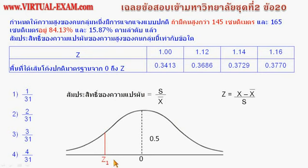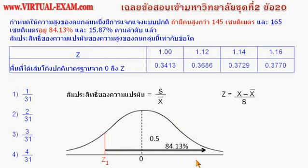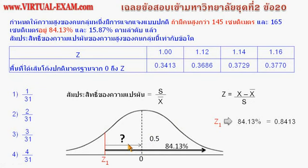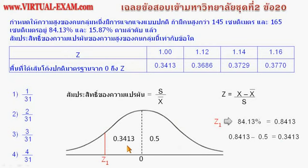Z1 แทนความสูง 145 cm คนที่สูงกว่า 145 cm คือพื้นที่ที่อยู่ทางขวาของ Z1 ถ้าคนกลุ่มนี้มี 84.13% พื้นที่ทางขวาของ Z1 คือ 84.13% ของพื้นที่ทั้งหมด แปลง 84.13% เป็นทศนิยมได้ 0.8413 พื้นที่ซีกขวา (จาก 0 ขวา) เท่ากับ 0.5 พื้นที่ที่เหลือจาก 0 ถึง Z1 คำนวณโดย 0.8413 - 0.5 = 0.3413